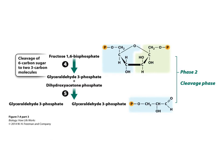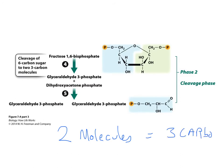Phase 2 is the cleavage phase. During the cleavage phase, we split our 6-carbon molecule into two 3-carbon molecules — glyceraldehyde-3-phosphate and dihydroxyacetone phosphate. The dihydroxyacetone phosphate is then converted to glyceraldehyde-3-phosphate. So basically, we do the initial split and convert both products to glyceraldehyde-3-phosphate. Now we have 2 molecules, each 3 carbons — we started with 6 total in 1 molecule.